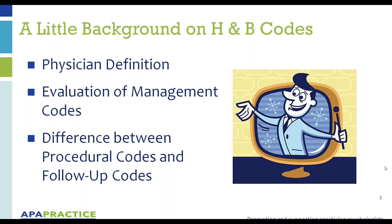We do not have access to evaluation and management codes. Essentially, there are two kinds of codes — activities that can be done. Of the approximately 9,000 procedures that the federal government, the American Medical Association, and CMS/Medicare/Medicaid allow, we are limited to procedure codes — specific activities. Namely, two: we do primarily diagnostic work, such as interviewing and testing, or we do intervention work, such as psychotherapy.